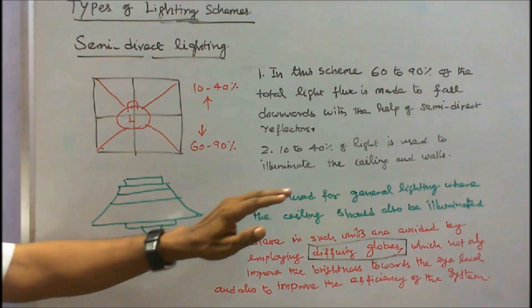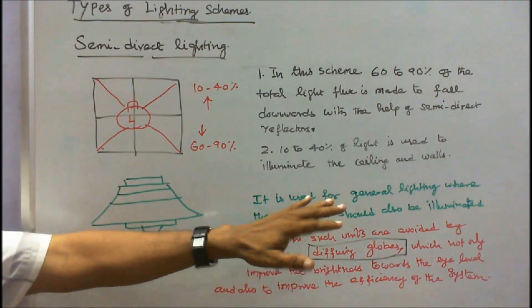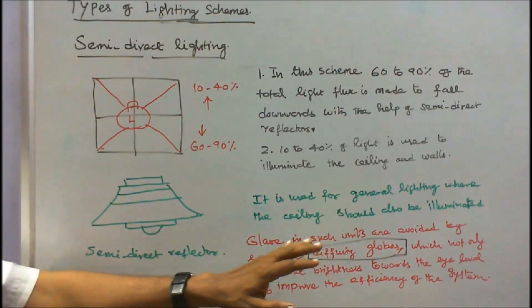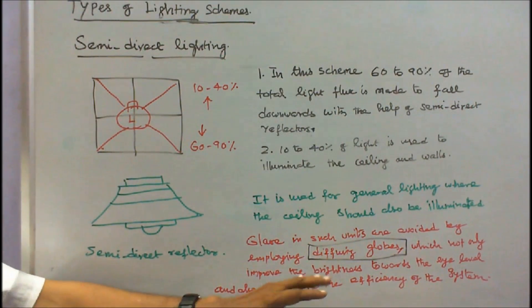It is used for general lighting where the ceiling should also be illuminated. Glare in such units is avoided by employing diffusing globes which not only improve the brightness towards the eye level but also improve the efficiency of the system.